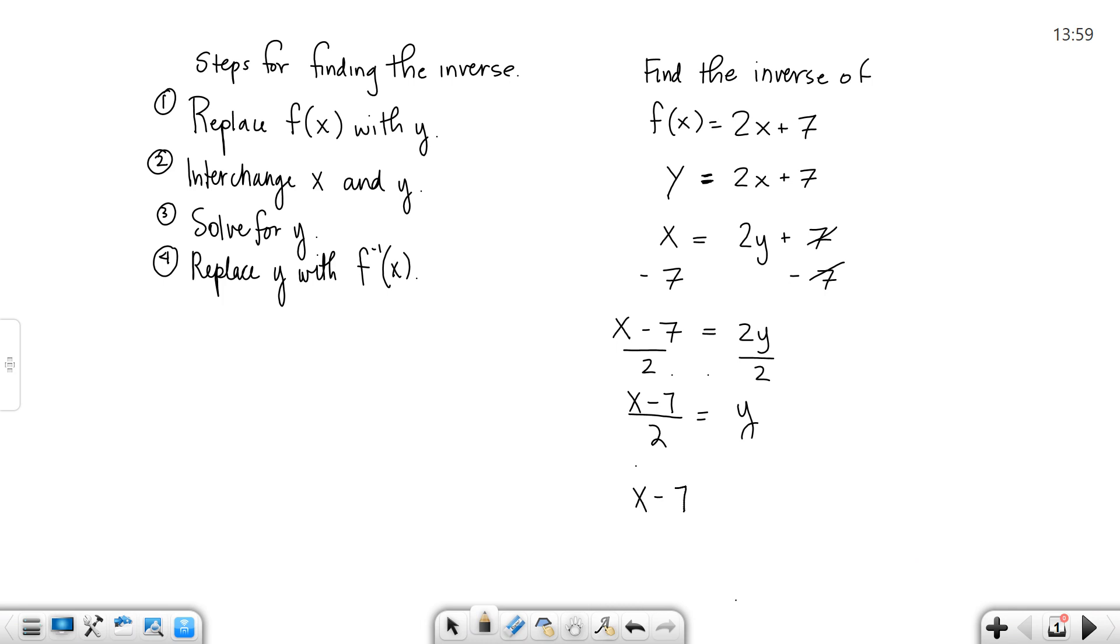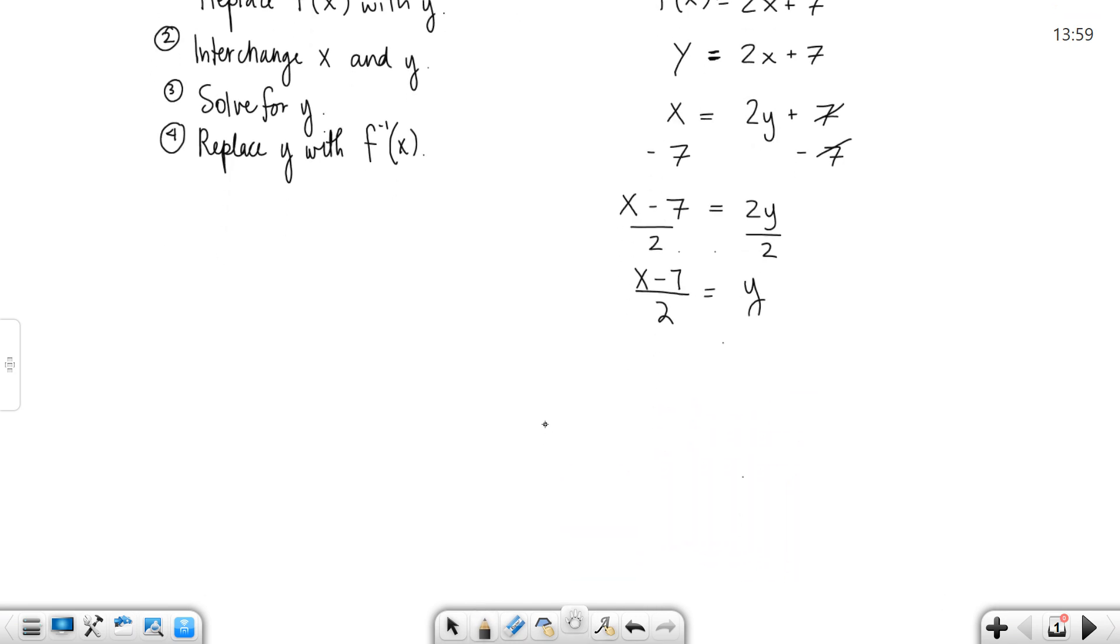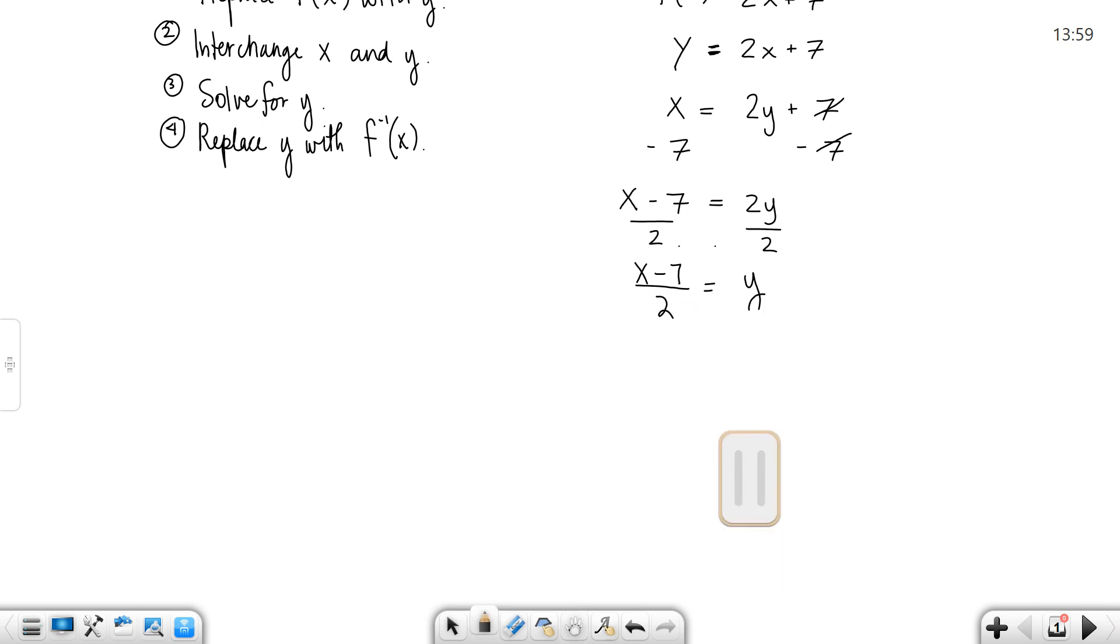You're going to say x minus 7 over 2 equals f inverse. Let's try it again. x minus 7 over 2.